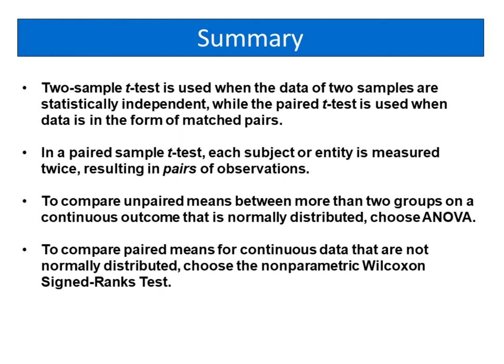In summary, two sample T test is used when the data of two samples are statistically independent, while the paired T test is used when data is in the form of matched pairs. In a paired sample T test, each subject or entity is measured twice, resulting in pairs of observations. To compare unpaired means between more than two groups on a continuous outcome that is normally distributed, choose ANOVA. To compare paired means for continuous data that are not normally distributed, choose the nonparametric Wilcoxon signed ranks test.